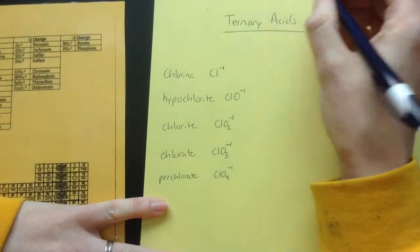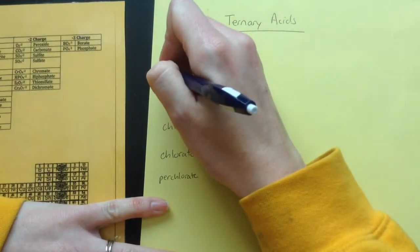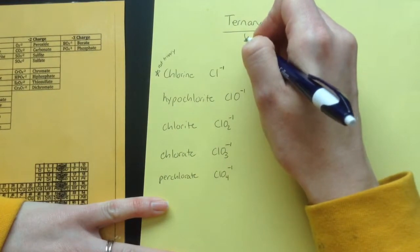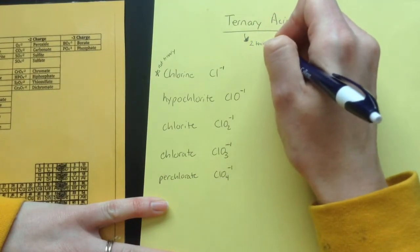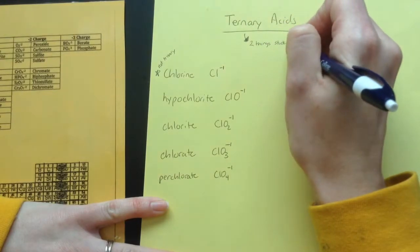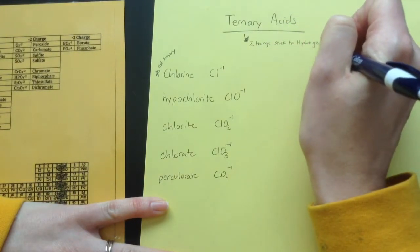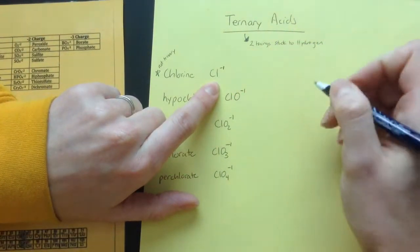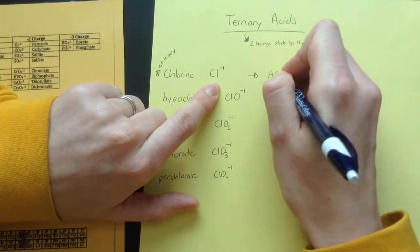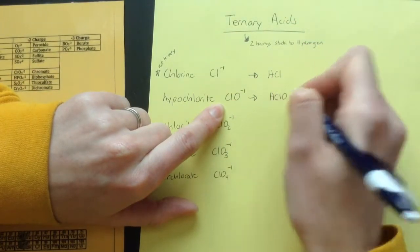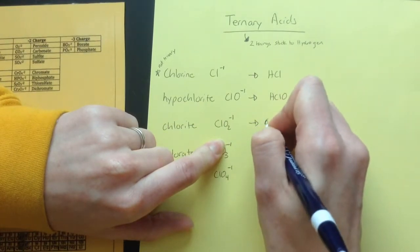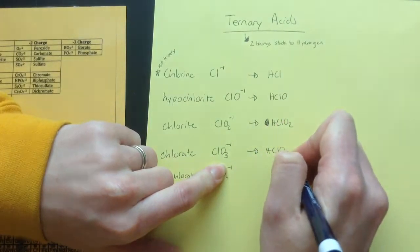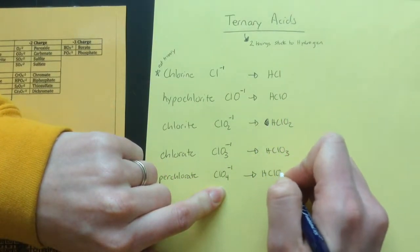So when these guys become an acid, so this one is not ternary, this one would be binary instead, but when they become acids we have two things stuck to hydrogen, and so we're just going to add hydrogen. Now remember hydrogen is plus one, so each of these is going to be just stuck to one hydrogen. So this will become HCl, and this one will become HClO, and this one will become HClO2.